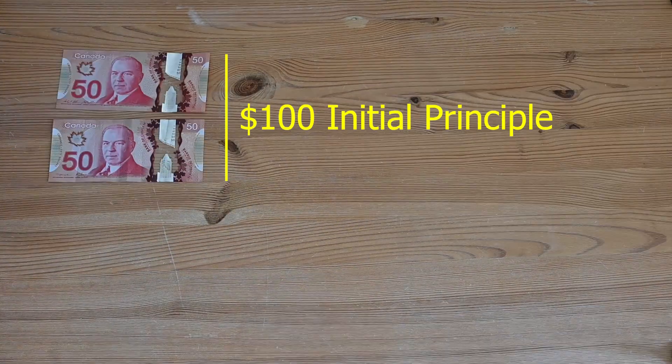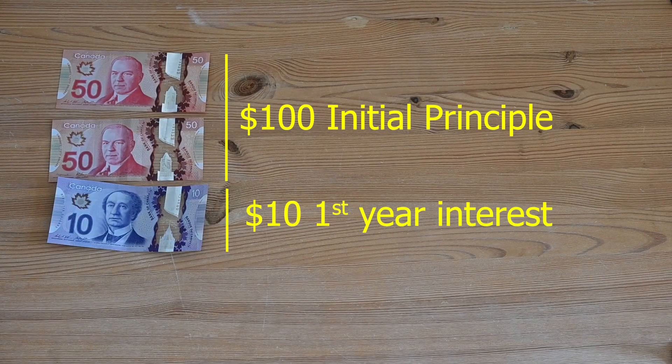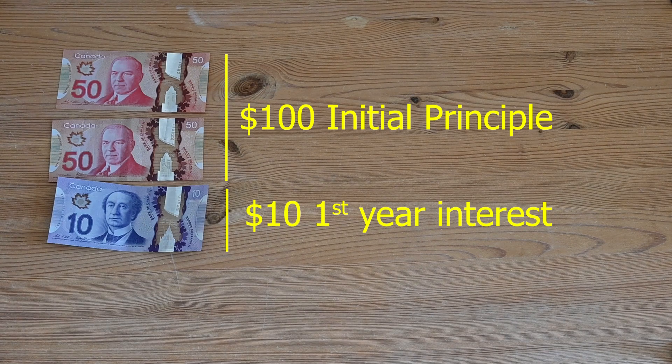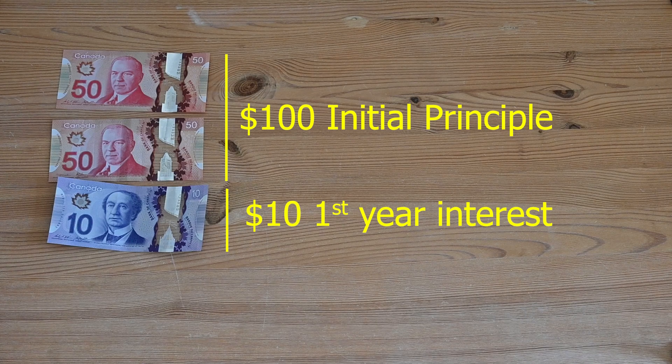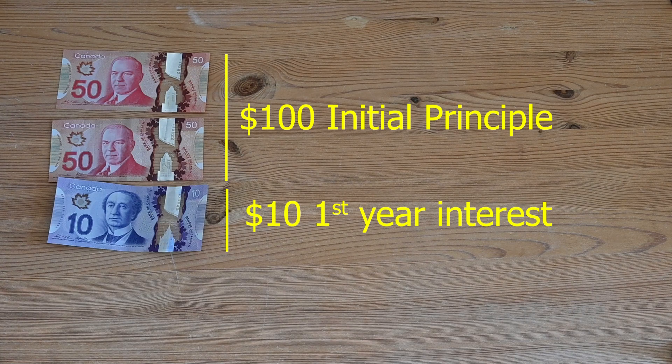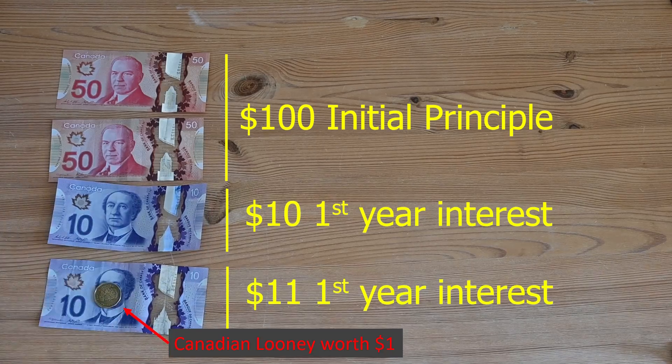Simple interest would say that for the second year you'd only owe me another $10. But that would only be the interest on the original $100. But you now owe me $110. So I want the full 10% on the entire $110. That is, I'm going to want $11 in my second year.